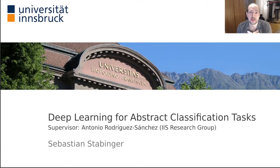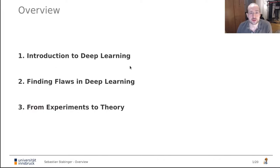Hi, my name is Sebastian Stabinger. I am doing my PhD with Antonio Rodriguez-Sanchez from the Intelligent and Interactive Systems Research Group at the Department of Computer Science. Today I'm going to talk to you about deep learning for abstract classification tasks. First, I'm going to give a quick introduction into deep learning and what the goal of my PhD actually is. Then I will talk about finding flaws in deep learning systems. And then I will present a theoretical framework that tries to explain those flaws.